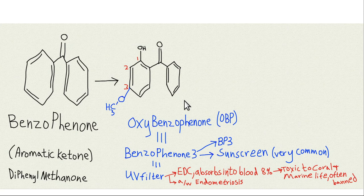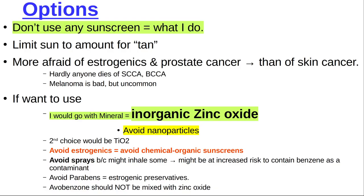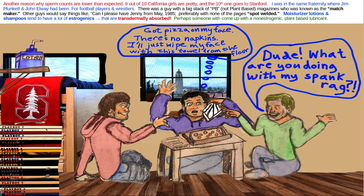Benzophenones are another type of estrogen typically found in sunscreens. Studies have shown that people who use these sunscreens absorb them into their blood and they stay in the blood for days. I would not recommend using sunscreen — the nanoparticles may be transdermally absorbed, and we do not know what effect they are having inside the body. There is a separate video on sunscreens if you want to know what to choose.